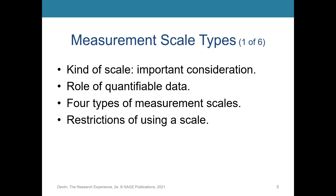The third type is interval measurement, where values are ordered and equally spaced throughout, but there is no true zero. Ratio is your highest level — the fourth level — with equal intervals and a true zero point. I always tell researchers to collect the most precise data you can. If you can collect ratio data, you should. You can always turn it into a lower-order data set, but you can never go the other way — you can never turn ordinal data into ratio.